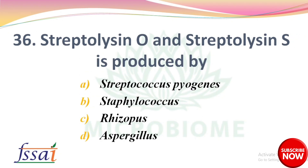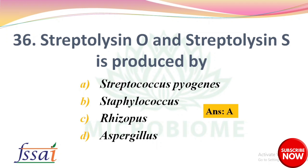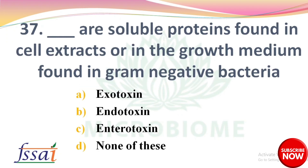Next: Streptolysin O and Streptolysin S are produced by — options: Streptococcus pyogenes, Staphylococcus, Rhizopus, Aspergillus. The right answer is option A, Streptococcus pyogenes. Next: Dash are soluble proteins found in cell extracts or in the growth medium, found in gram-negative bacteria — options: exotoxin, endotoxin, endrotoxin, none of these. The right answer is option B, endotoxin.